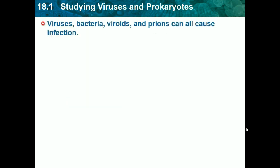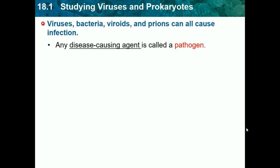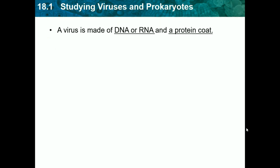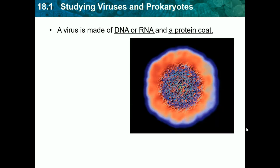Viruses, bacteria, viroids, and prions can all cause infections. Any disease-causing agent is called a pathogen. A virus is made of DNA or RNA and a protein coat — that's an important thing to know. So a virus is some genetic information, which would be DNA or RNA, and then a protein coat. It's non-living, so it's a non-living pathogen, and it can infect many organisms.